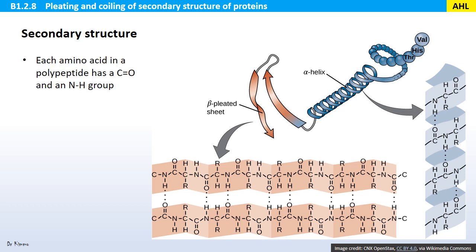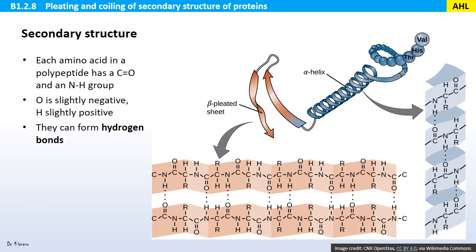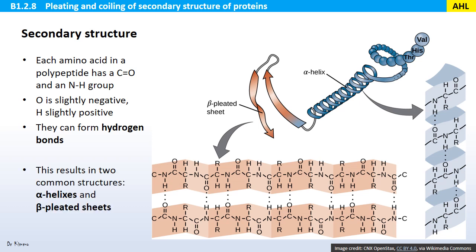Secondary structure. Each amino acid has a carboxyl group and an amine group. In a polypeptide, after condensation reactions, each amino acid has a carbon connected to an oxygen with a double bond, and a nitrogen connected to a hydrogen. The oxygen is slightly negative and the hydrogen is slightly positive, so they can form hydrogen bonds. This results in two common structures: alpha helixes and beta pleated sheets — the secondary structures of polypeptides.